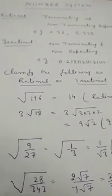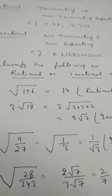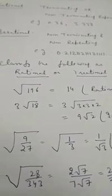Now, we will discuss some questions. Classify the following as rational or irrational. If I take square root 196, square root 196 is equal to 14 and it is rational.